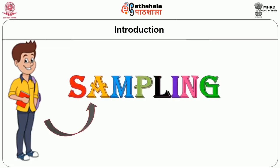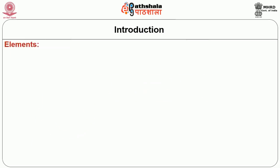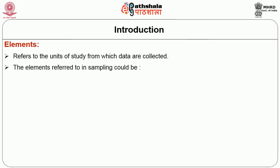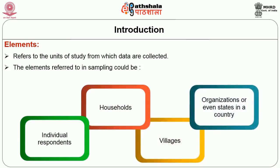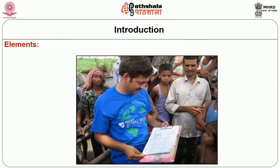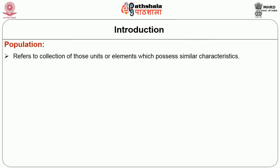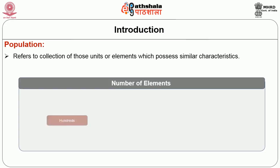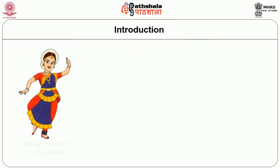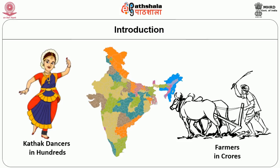Before we go into the details of sampling, let us first clarify the meanings of certain terms like population and elements. The term element refers to the unit of study from which data are collected. Elements could be individual respondents, households, villages, organizations, or even states in a country. The term population refers to a collection of those units or elements which possess similar characteristics. It consists of a number of elements whose number may range from hundreds to lakhs. For example, the number of Kathak dancers in India is in hundreds, whereas the number of farmers in the country is in crores.